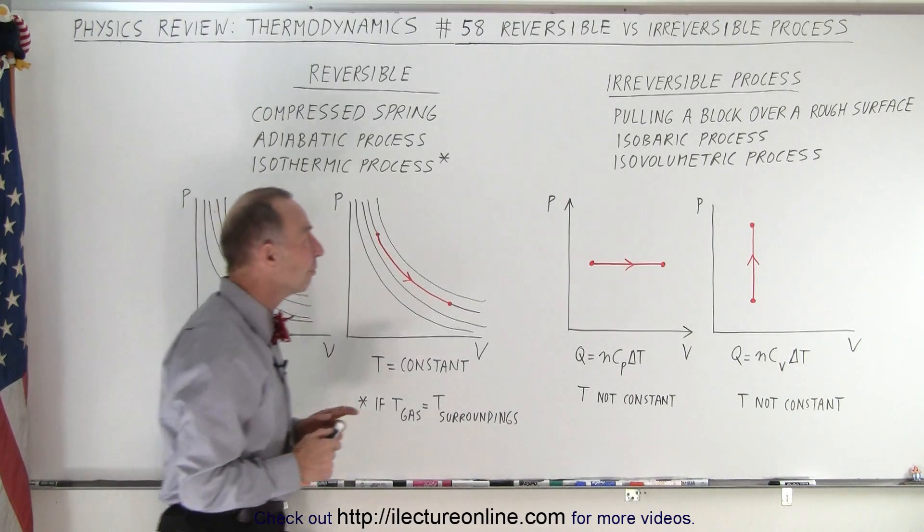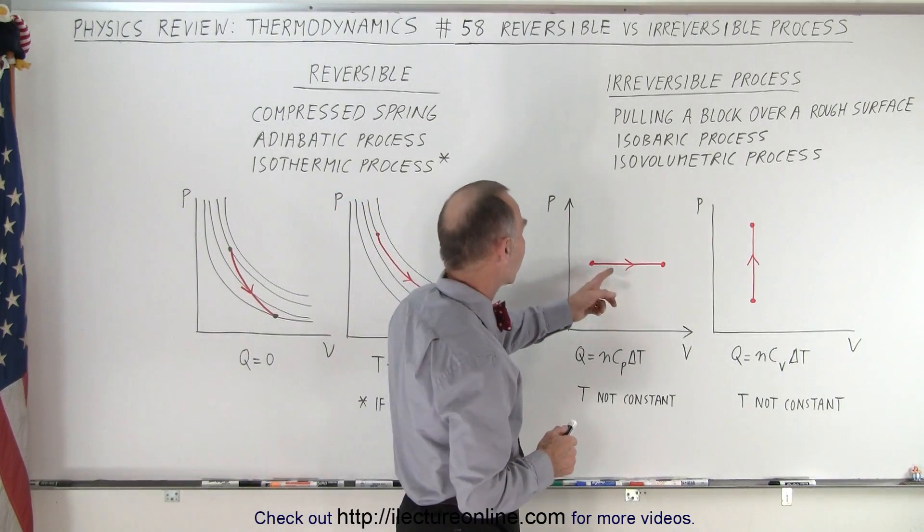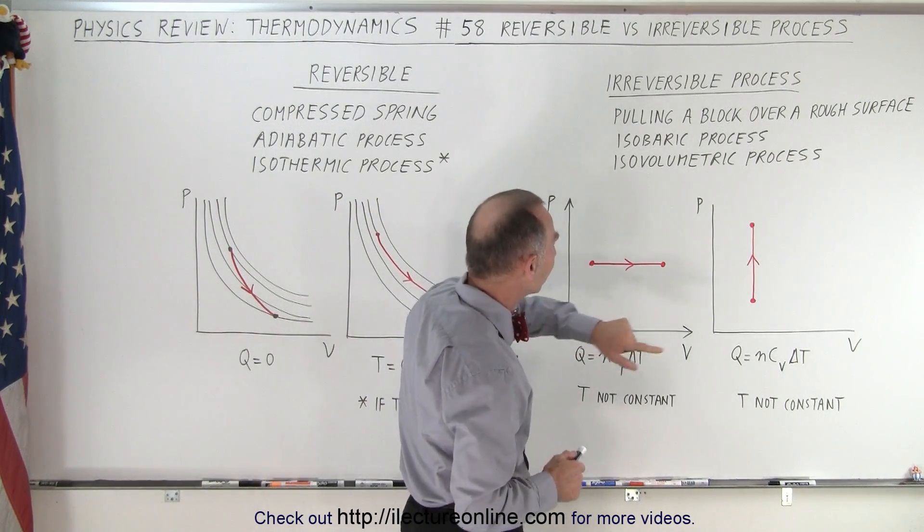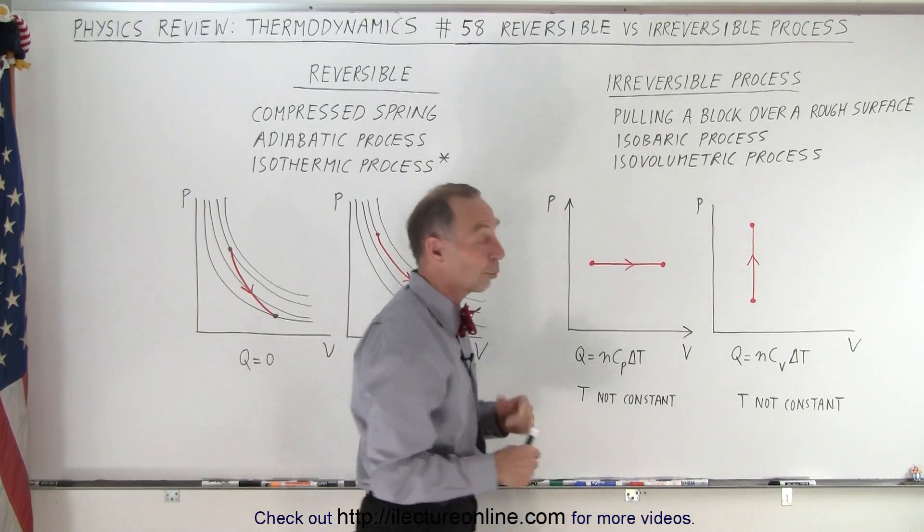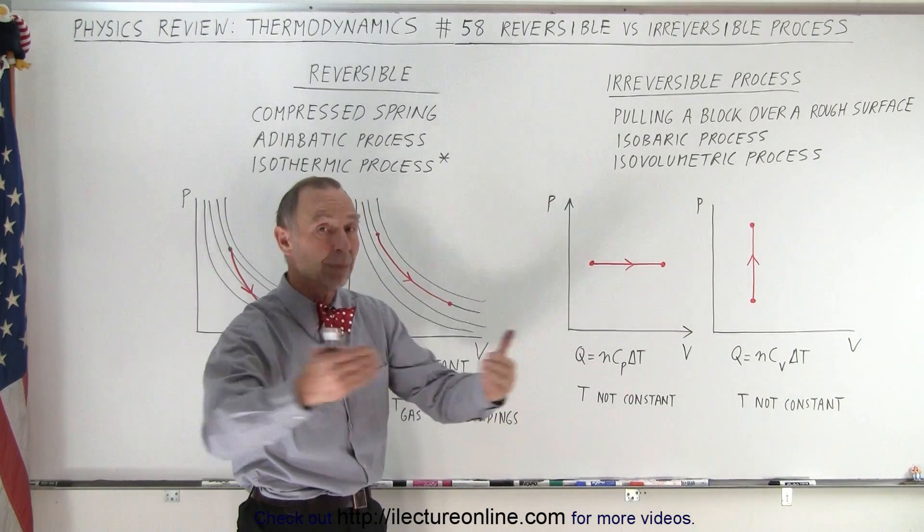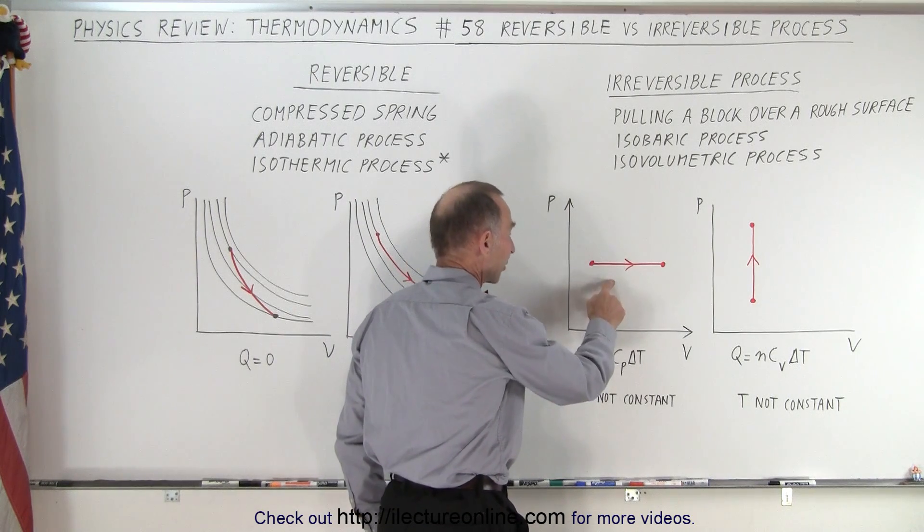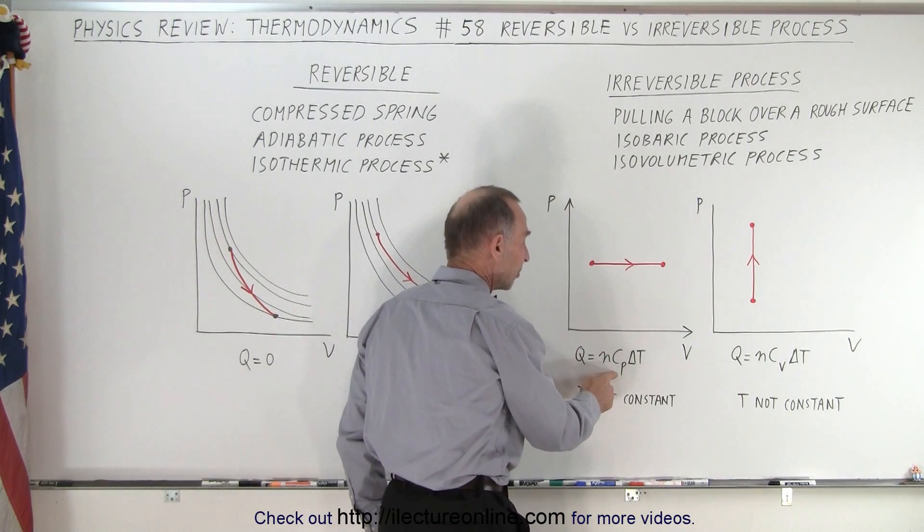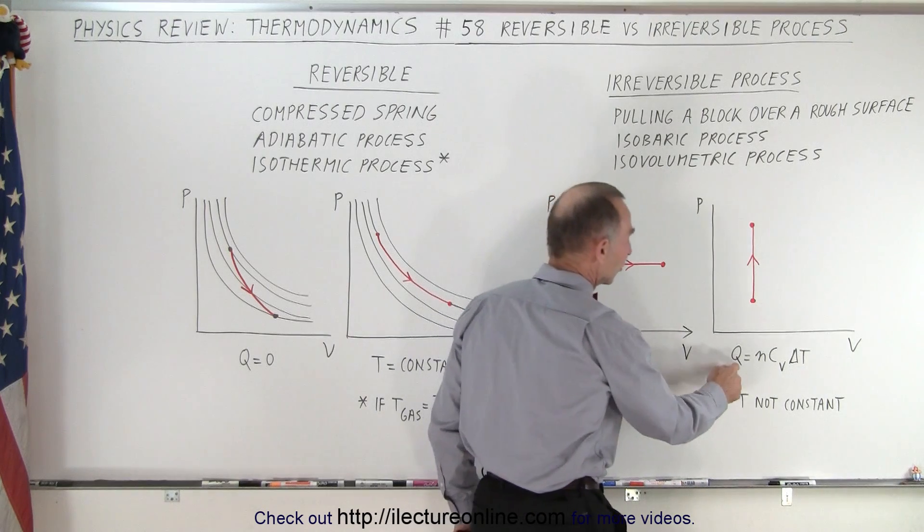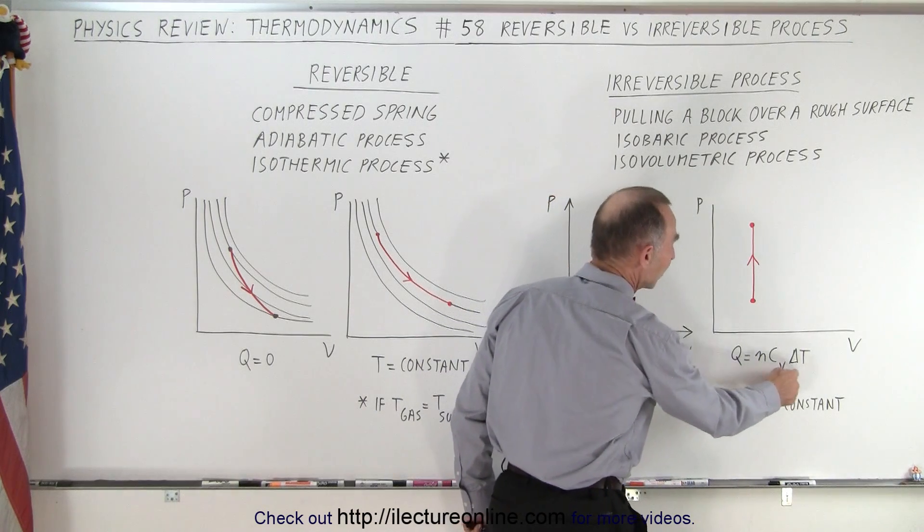But that's not the case for the isobaric process and for the isovolumetric process. Why not? In both cases heat is being exchanged. The heat exchange for an isobaric process is n times C sub P times delta T, and for an isovolumetric process is n C sub V delta T.